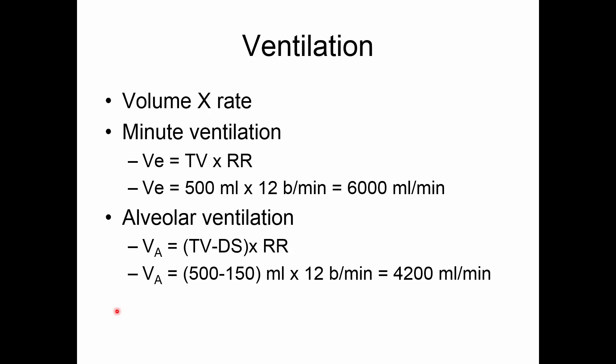One breath is a volume, but many breaths over time result in something called a ventilation. Volume times respiratory rate — just like stroke volume times heart rate is your cardiac output — gives you ventilation in mils per minute or liters per minute. So the total or minute ventilation is tidal volume times respiratory rate. If your tidal volume is 500 and your respiratory rate is 12 breaths a minute, that's 6,000 mils per minute.